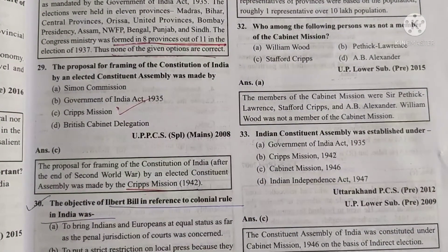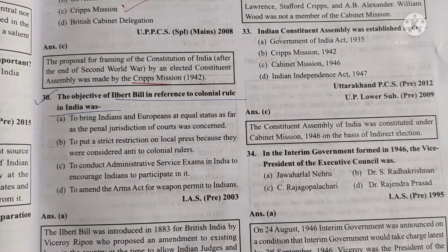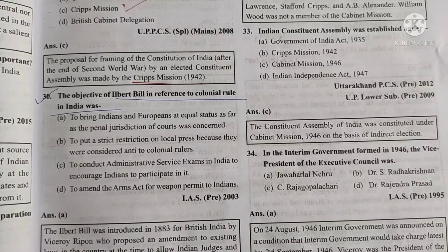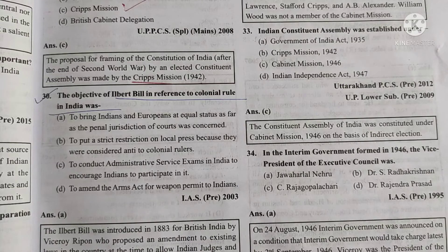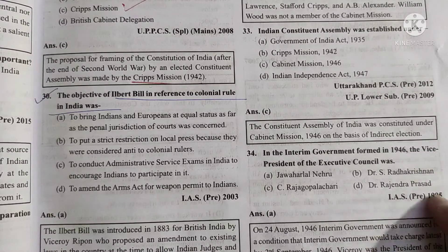Moving to question number 30: the objective of the Ilbert Bill with reference to colonial rule in India. What was the objective of the Ilbert Bill? Options included: putting strict restrictions on the local press considered anti-colonial; conducting administrative services exams in India to encourage Indian participation; and amending the Arms Act for weapon permits to Indians — none of these were correct.